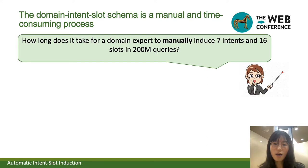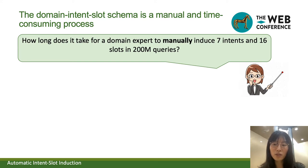However, those intents and slots are predefined manually. Most of the time we need to hire several domain experts to do this work. So here is the question: say we had 200 million queries — how long does it take for a domain expert to manually induce seven intents and 16 slots on a certain domain?